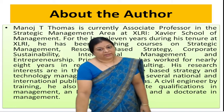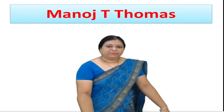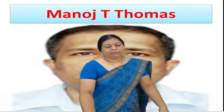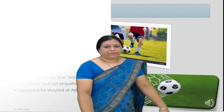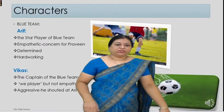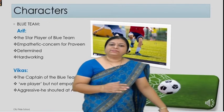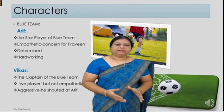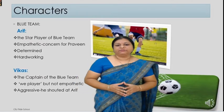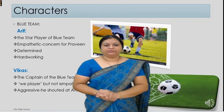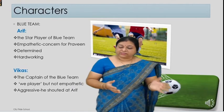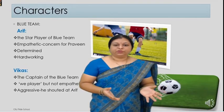We should learn from him. Let's start the lesson. We will know more about the characters of this lesson. As I told you, there are two teams — the blue team as well as the red team. Arif is a star player of the blue team. He is very empathetic and concerned for Praveen. He is very determined and hard-working, and a very emotional person. He cares for his teammates, and that's the sportsmanship. We should be kind-hearted.